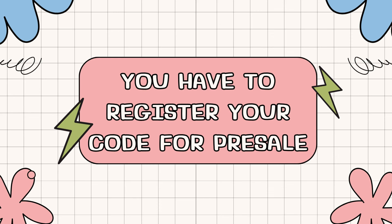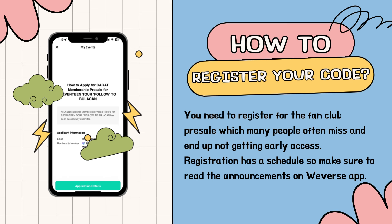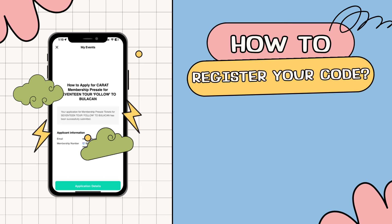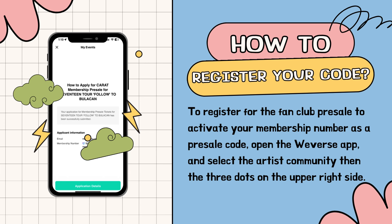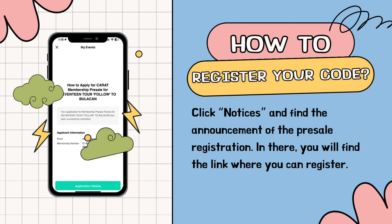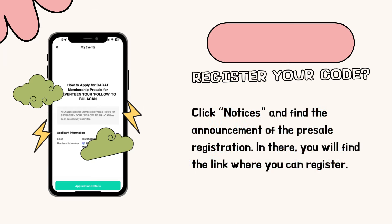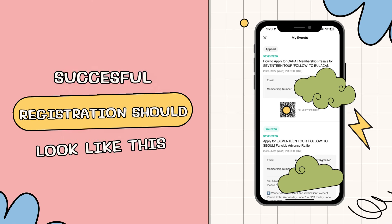You're not done yet! You have to register your code for presale. You need to register for the fan club presale, which many people often miss and end up not getting early access. Registration has a schedule, so make sure to read the announcements on the Weverse app. To register and activate your membership number as a presale code, open the Weverse app, select the artist community, then tap the three dots on the upper right side. Click notices and find the announcement of the presale registration — in there, you will find the link where you can register. Successful registration should look like this.